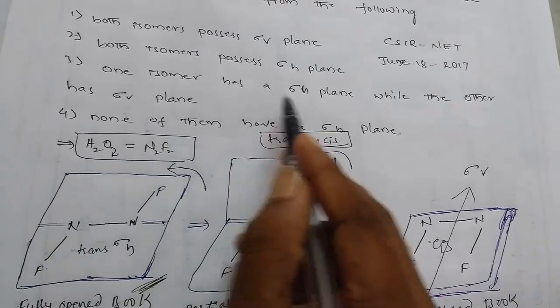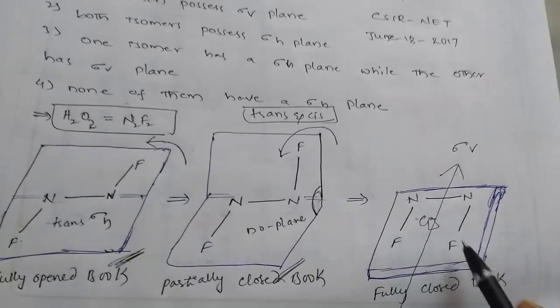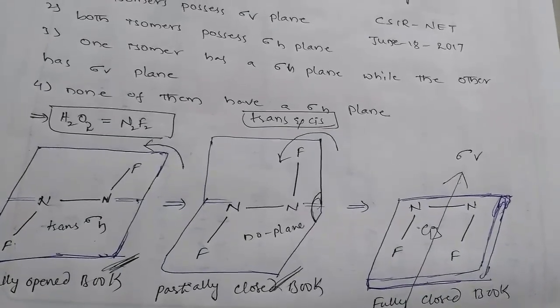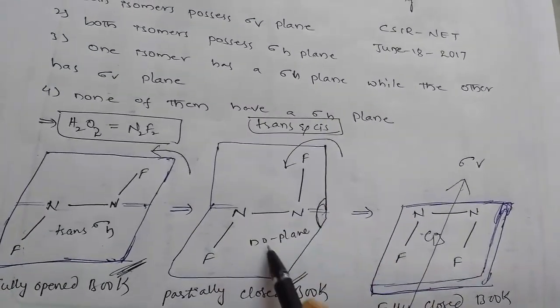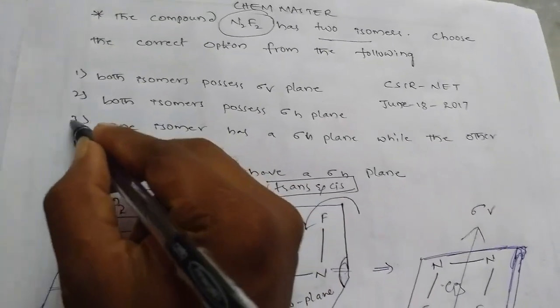One isomer has a sigma H plane, that is in trans, while the other has sigma V plane, that is in cis. So in partially closed, there is no plane of symmetry. So that's why option 3 is the right answer for the given problem.